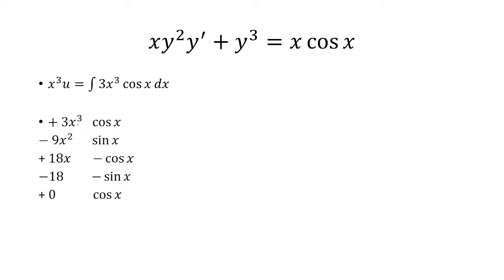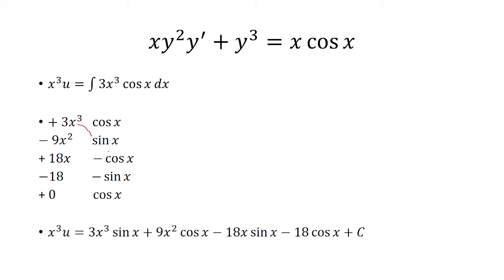Now I multiply the diagonals: 3x cubed times sine x, negative 9x squared times negative cosine x, 18x times negative sine x, and negative 18 times cosine x. Once I reach 0, I stop. Make sure to include the constant C, since this integral has no limits.